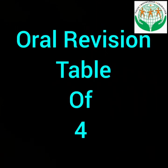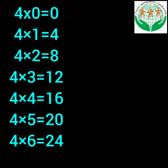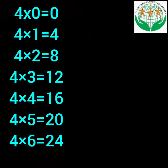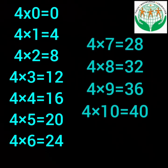Firstly we will revise the table of 4. All students, revise the table of 4 with me. 4 times 0 is 0, 4 times 1 is 4, 4 times 2 is 8, 4 times 3 is 12, 4 times 4 is 16, 4 times 5 is 20, 4 times 6 is 24, 4 times 7 is 28, 4 times 8 is 32, 4 times 9 is 36, 4 times 10 is 40. Now we will revise the table of 5.